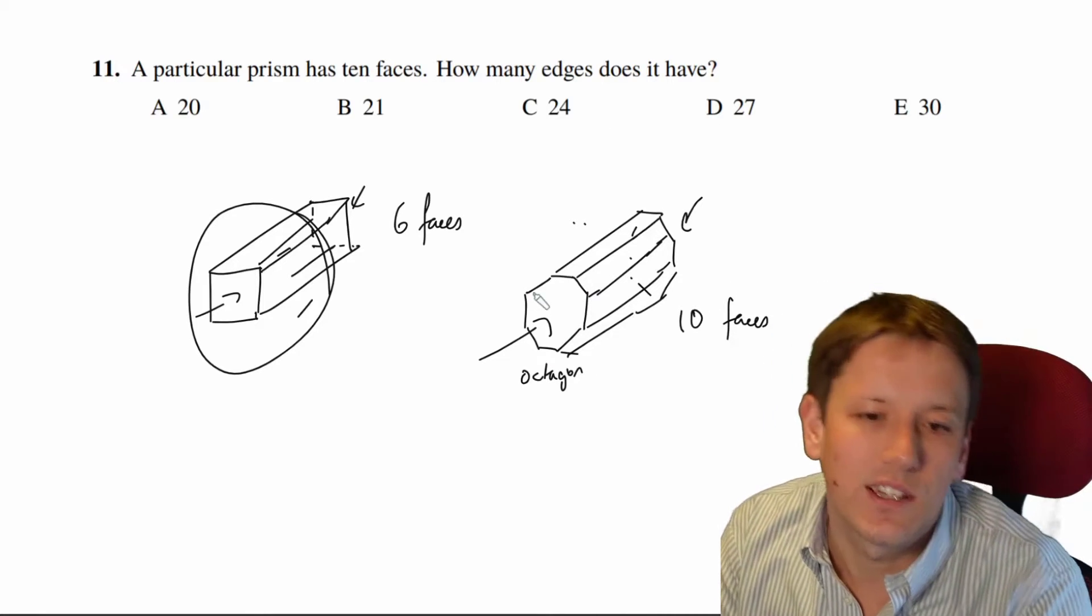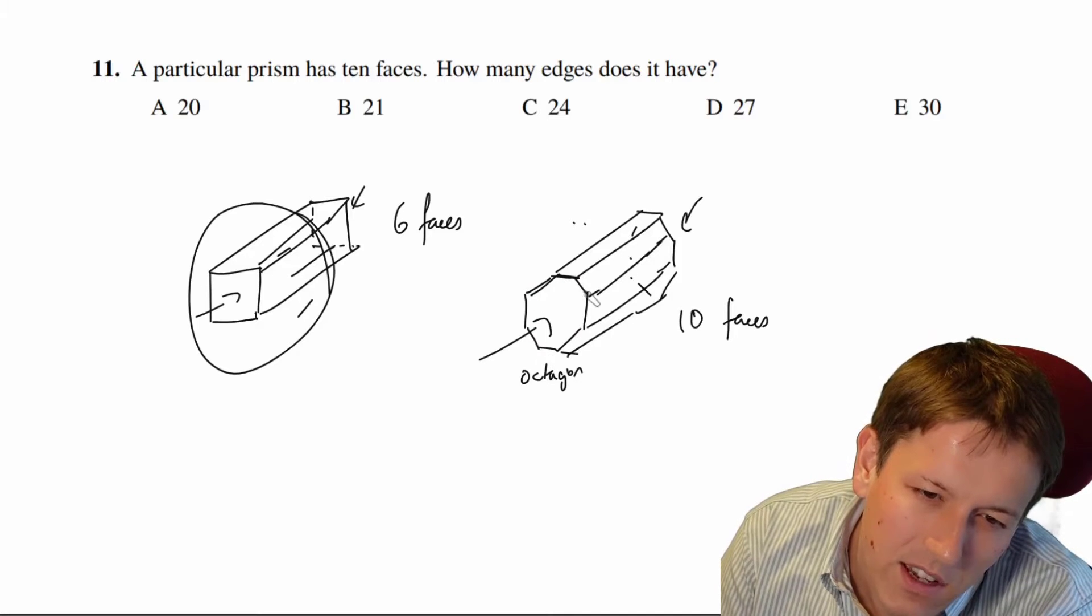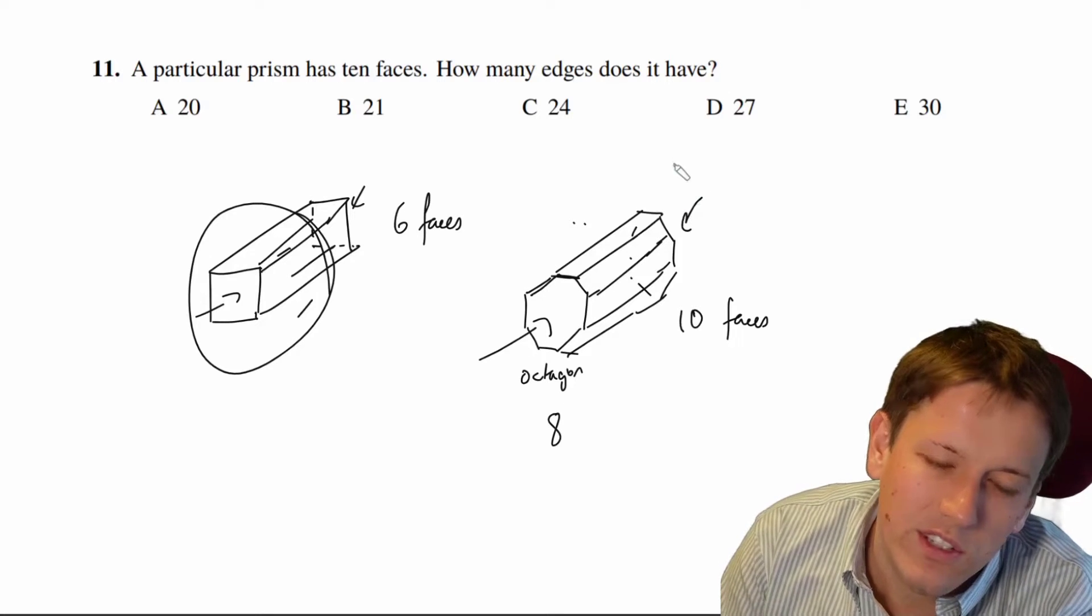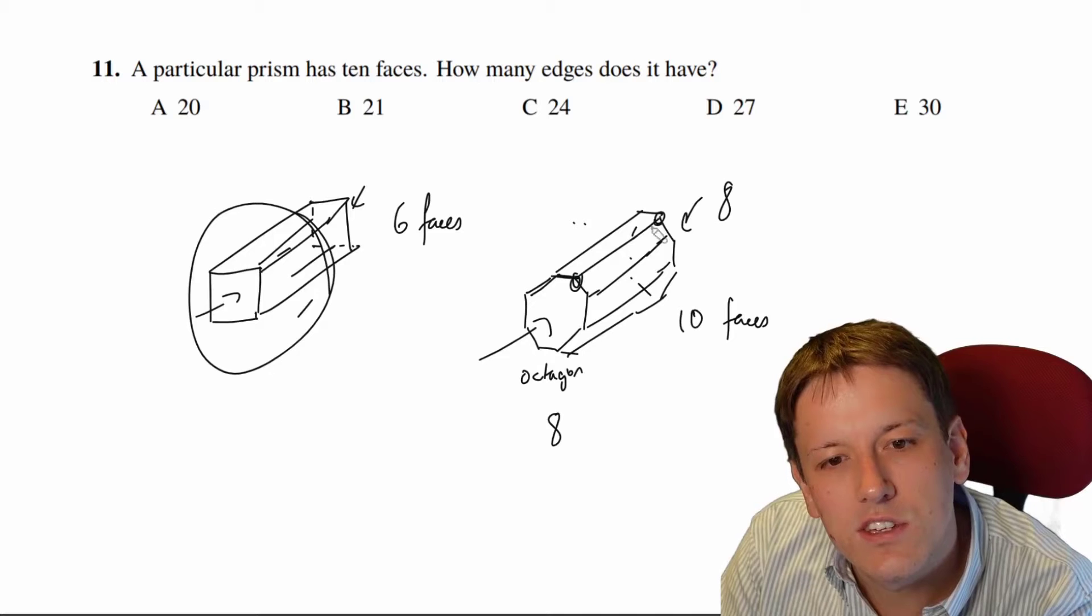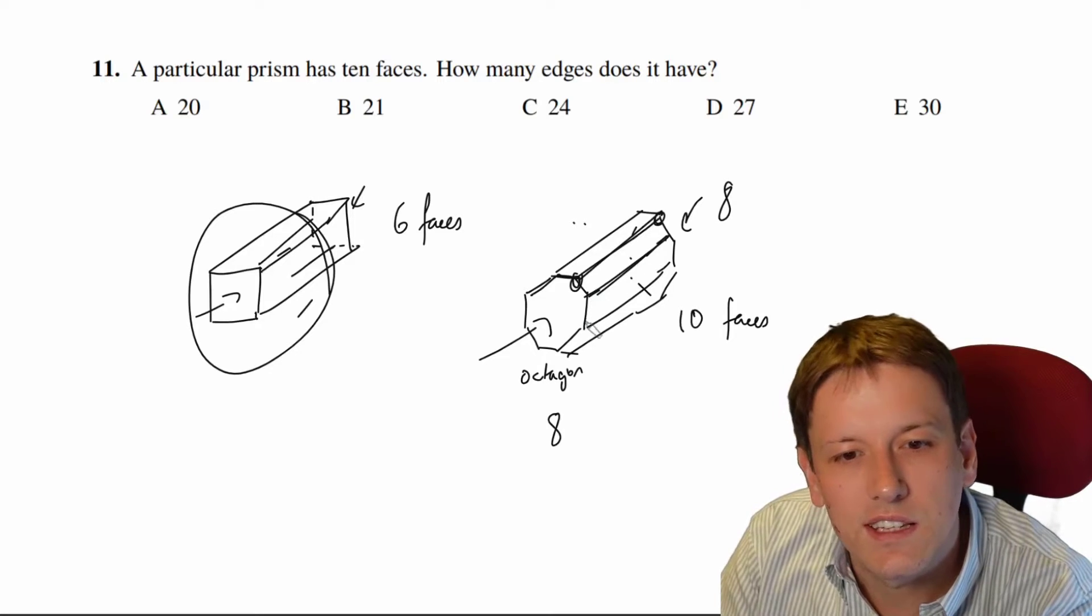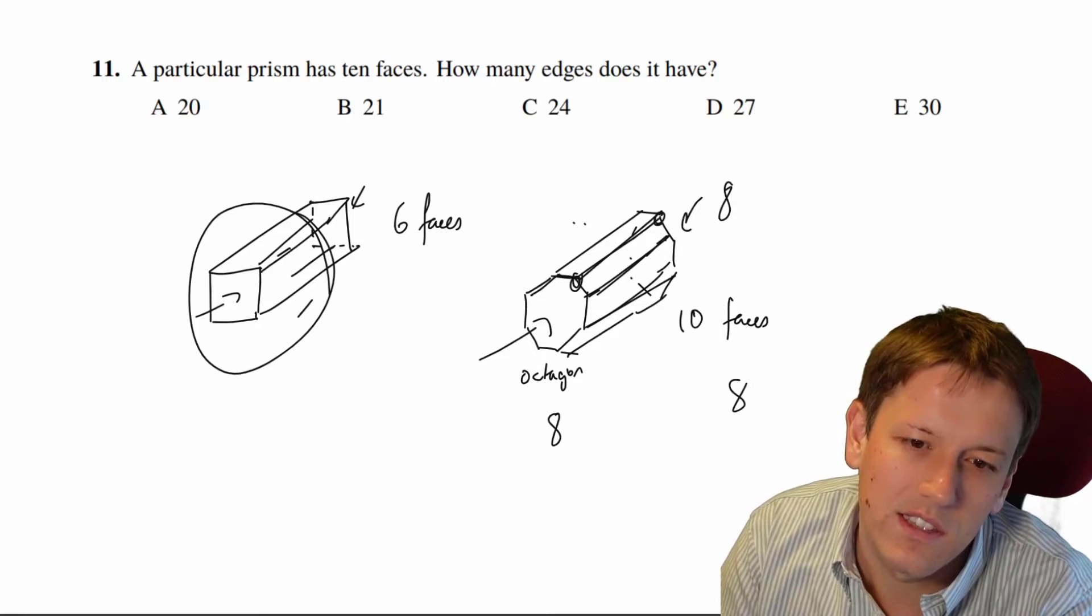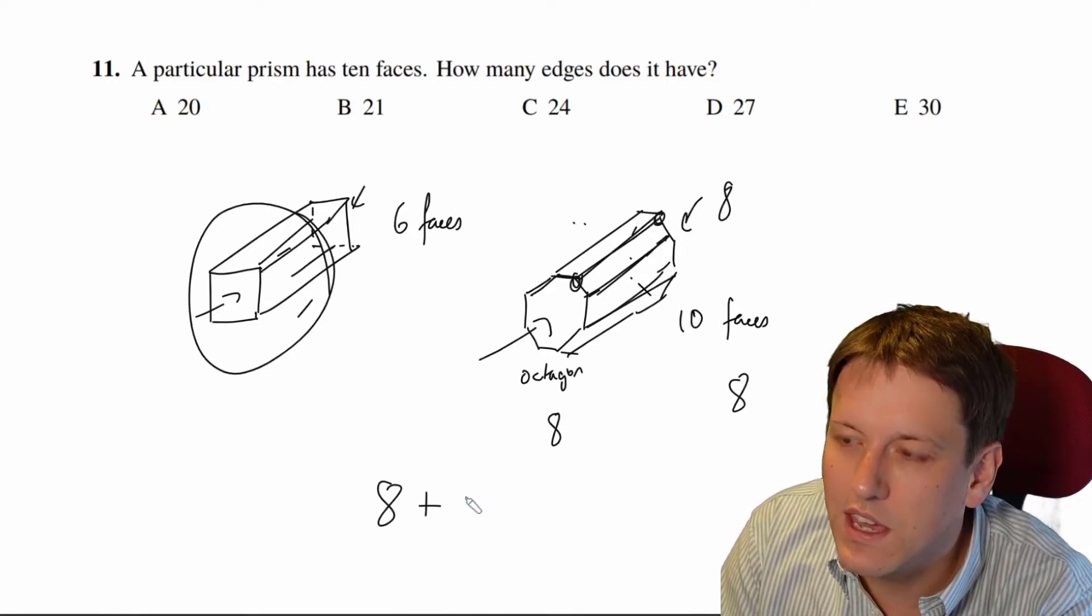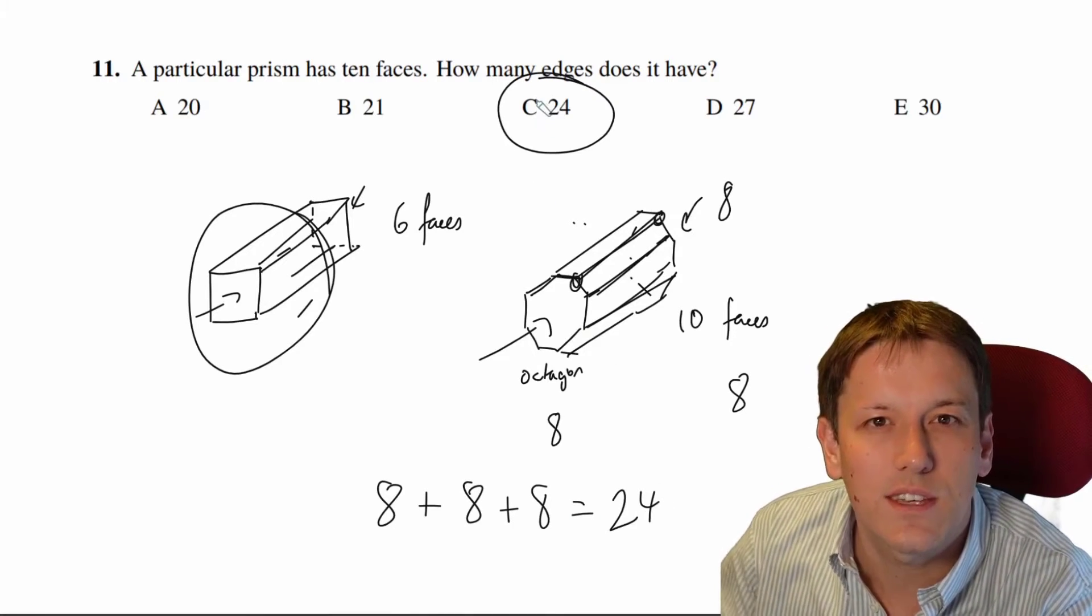So how many edges does it have? Well the octagon has eight sides and they become edges of this three-dimensional shape so there's going to be eight edges on this octagon, there's also going to be eight on the one on the back and then there are eight edges that go from each of the connecting sides as well from each of the eight vertices on this side to this side so there's another eight there. So the answer to this question is that the number of edges is going to be 8 + 8 + 8 which is 24 and so the answer is C.